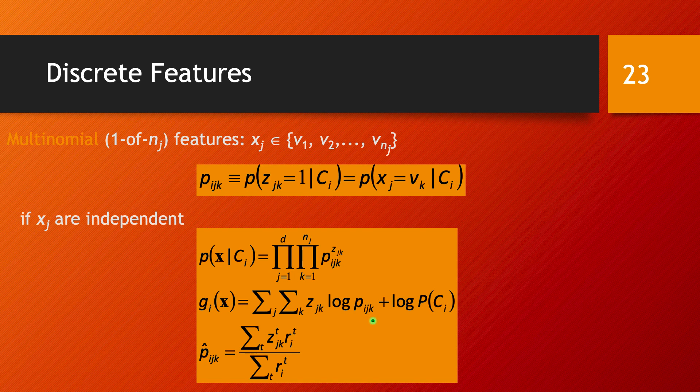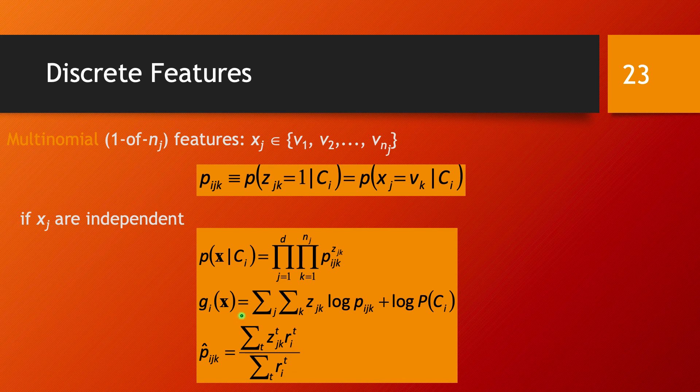For a new data point, after training and making these estimates for p_ijk, we predict the class according to this estimator. We calculate g_i(x) and then take the class C_i that maximizes the value g_i for that data point x.